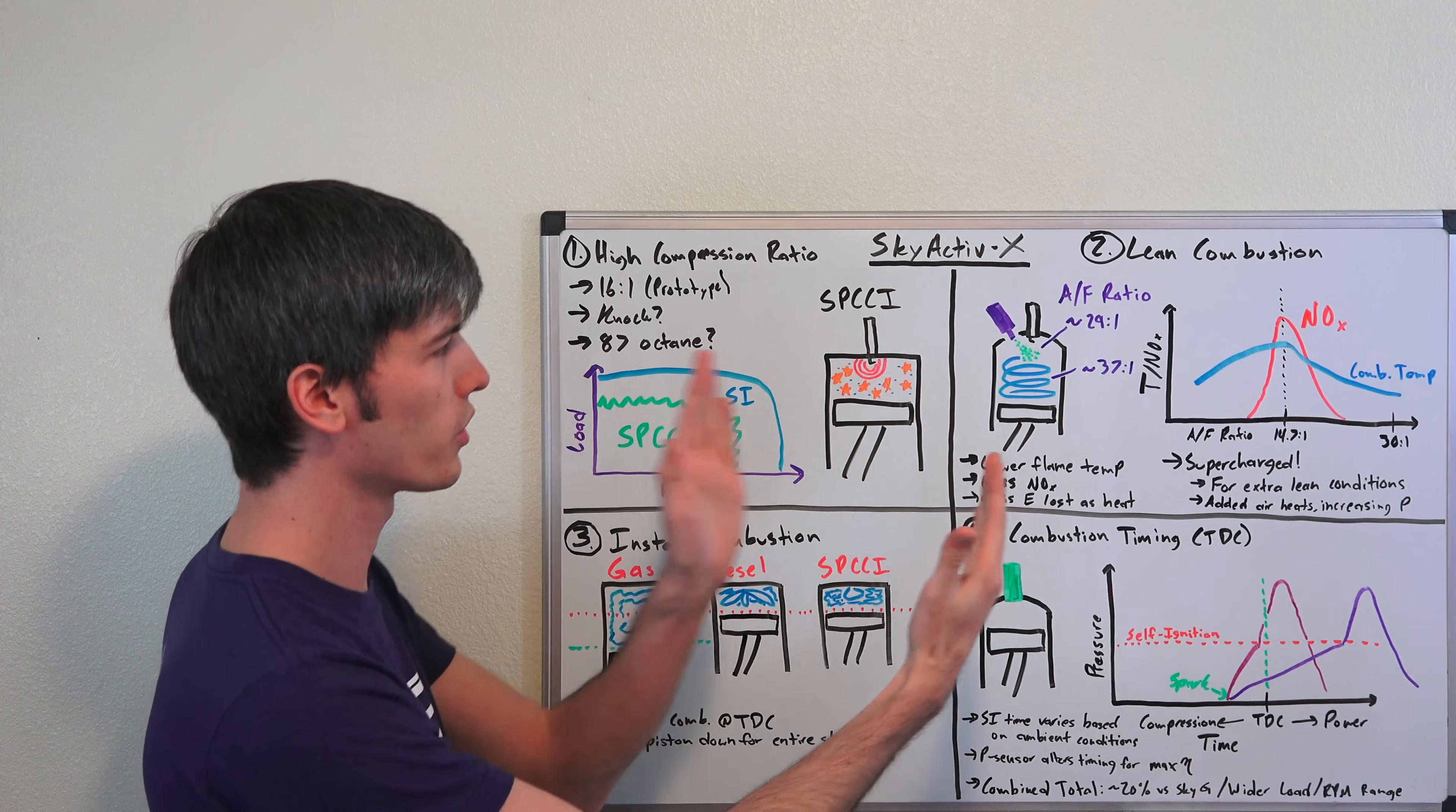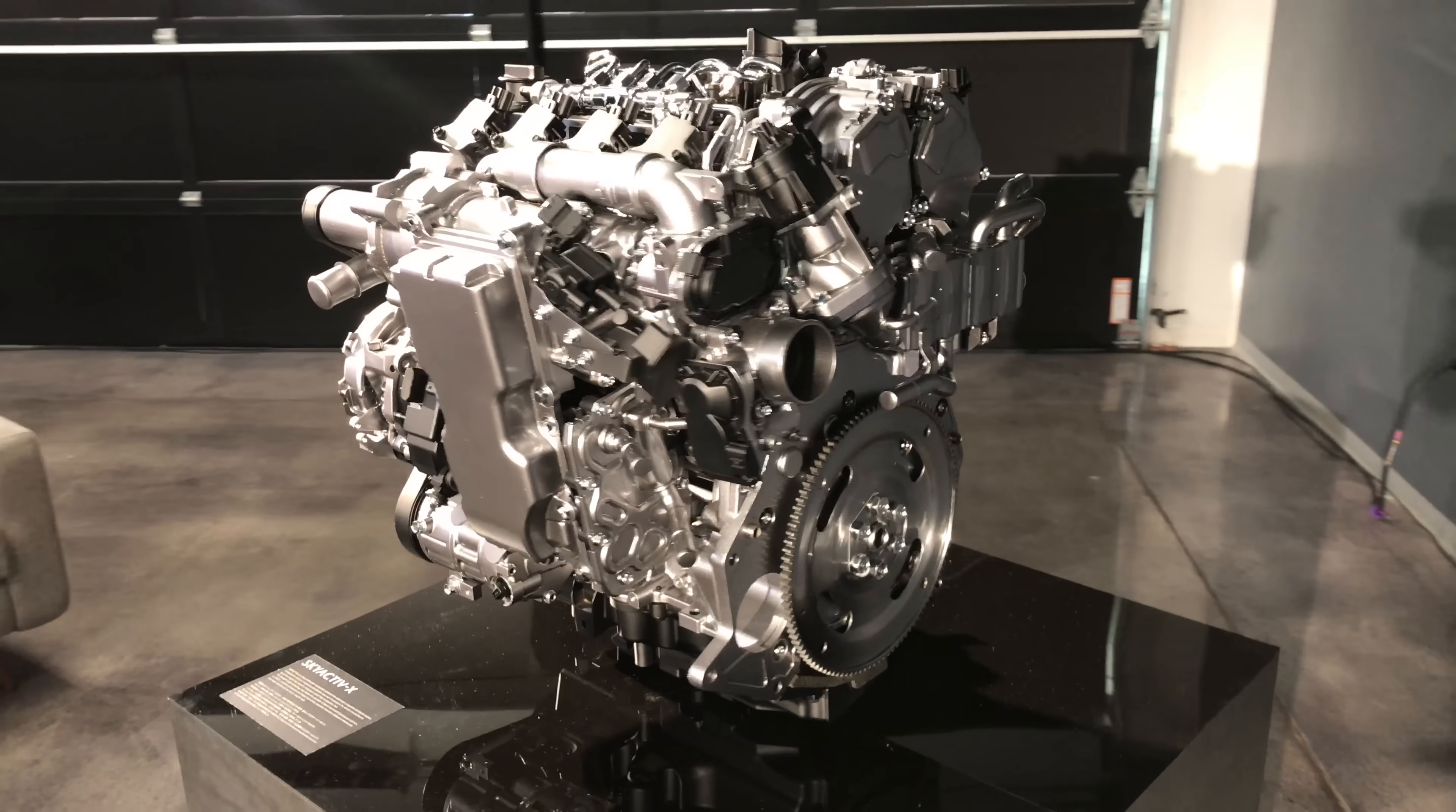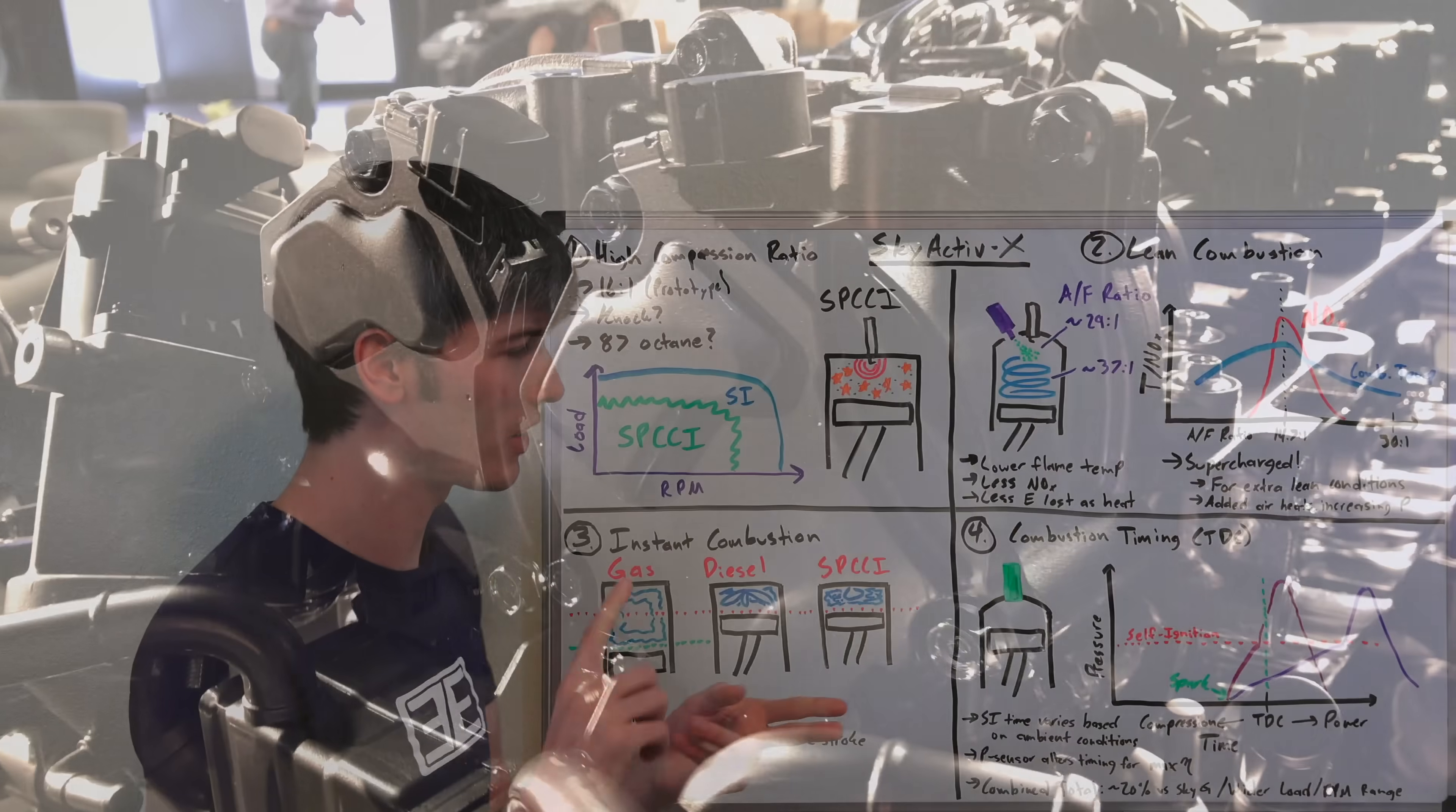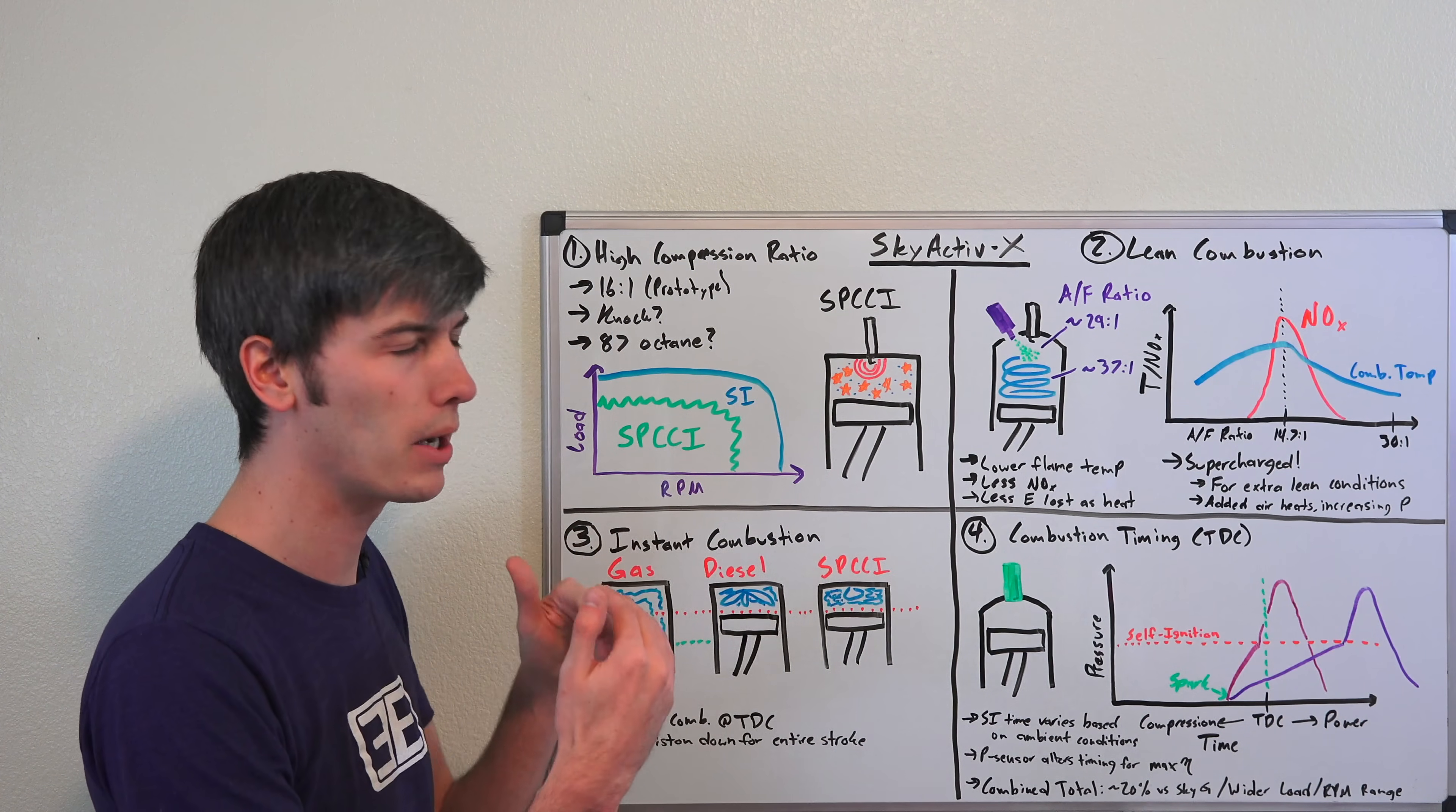So what are their results? The Skyactiv-G engine was class-leading, that's their previous gasoline internal combustion engine was already class-leading in fuel economy, and they have increased its fuel economy by 20%. Almost as exciting, if not more exciting than that, is that it now operates efficiently at a much wider load range and a much wider RPM range.